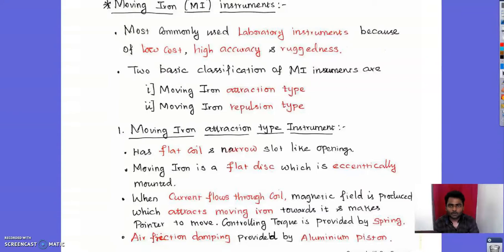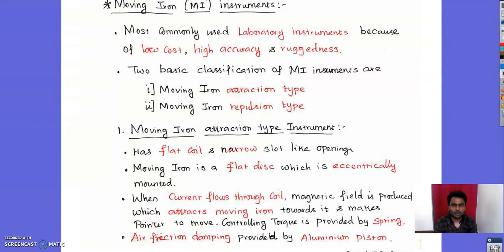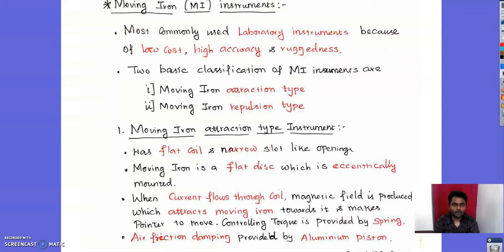First, we look at the moving iron attraction type instrument. It has a flat coil with a narrow slot opening, and the moving iron is a flat disc. This flat disc is eccentrically mounted on the needle. When current flows through the coil, a magnetic field is produced which attracts the moving iron.